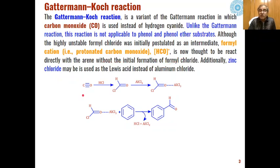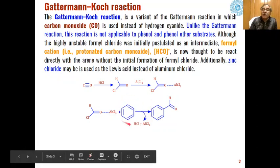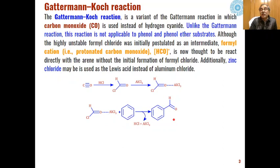In the Gatterman-Koch mechanism, carbon monoxide first reacts with hydrogen chloride to give chloroformaldehyde. This chloroformaldehyde then reacts with the Lewis acid — anhydrous aluminum chloride — giving a coordination complex where, due to attraction of electron density toward the more electronegative oxygen atom, the carbon becomes more electrophilic. The chlorine is also electron-withdrawing, making this carbon even more electrophilic. This intermediate is then attacked by the aromatic system to undergo formylation at a very fast rate, which is why this reaction is also used industrially for formylation of benzene to benzaldehyde.